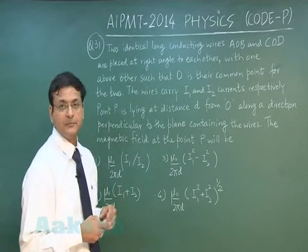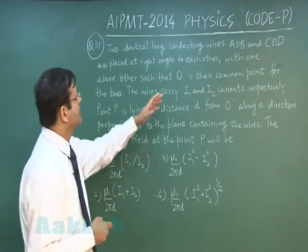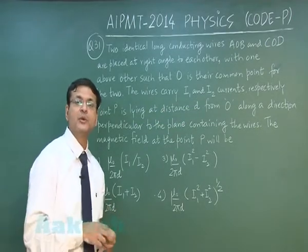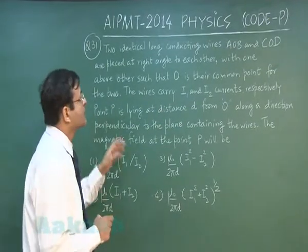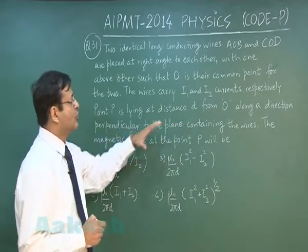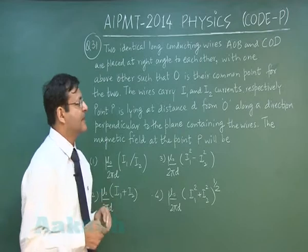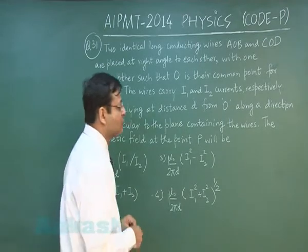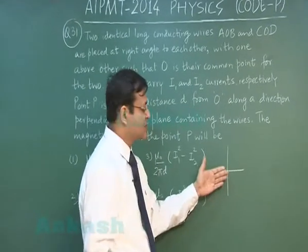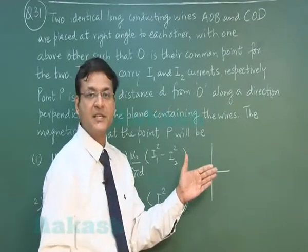Now, they will be creating magnetic field. The wires carry current I₁ and I₂. If they are creating magnetic field that will also be mutually perpendicular to each other. Now point P is lying at a distance D from O along a direction perpendicular to the plane containing the wires. If let us suppose the wires are something like this, if you are making a plus sign then from the point of intersection you can see it is coming out at a distance D.